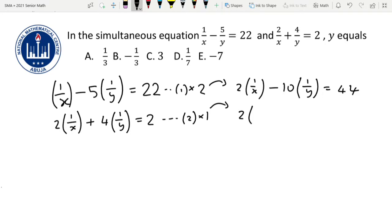And multiplying equation 2 by 1, it still remains the same: 2(1/x) + 4(1/y) = 2. So we have 2(1/x) in the upper equation and 2(1/x) in the lower equation. To cancel both of them out, we're going to subtract. We'll call this equation 3 and the other one is equation 4. We'll now subtract equation 4 from equation 3.